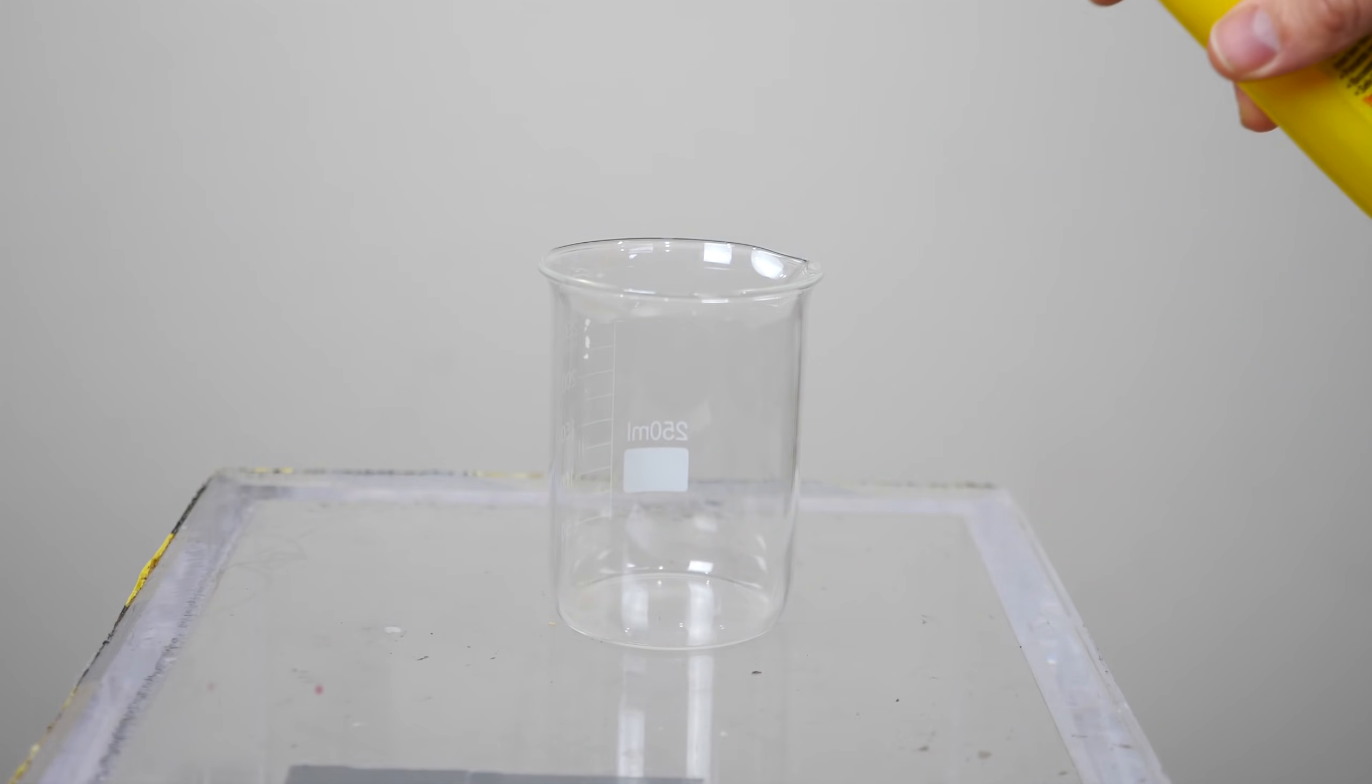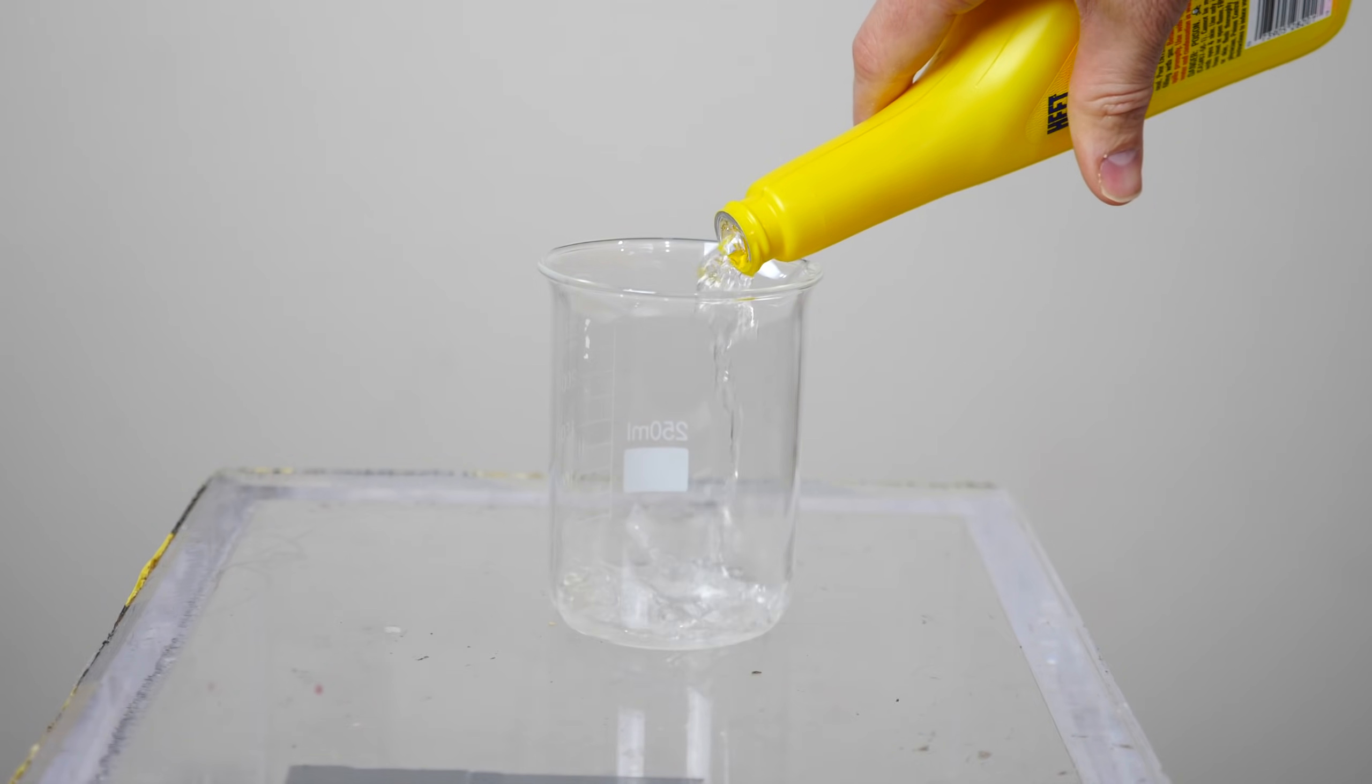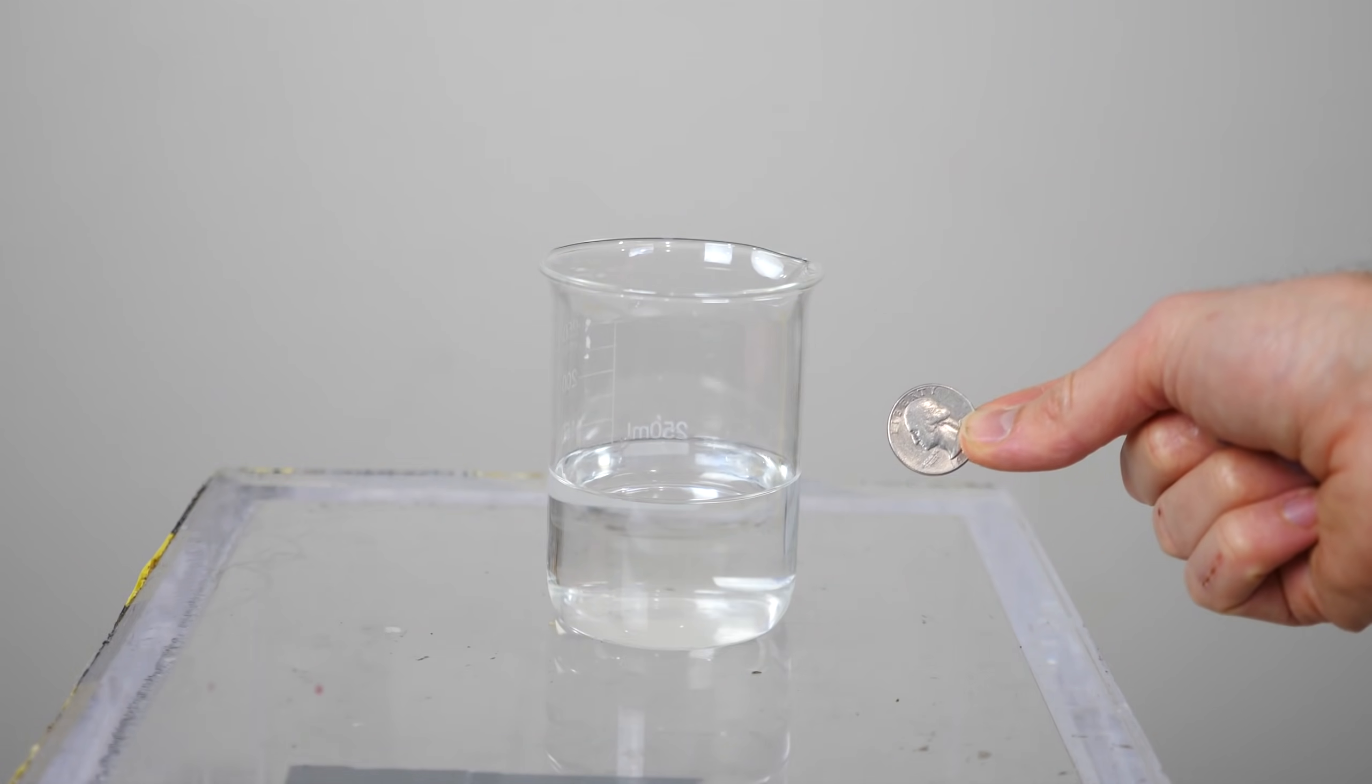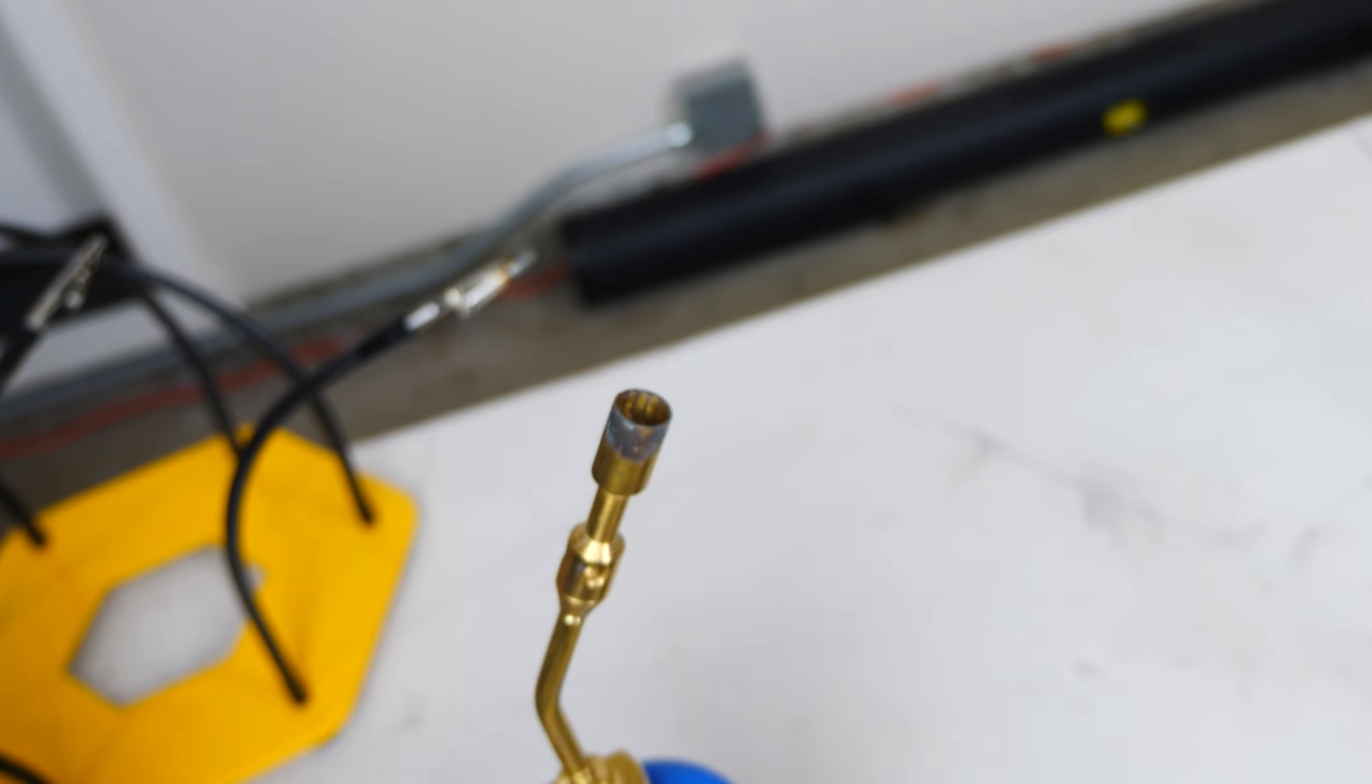Okay, so in order to do this you just need some methyl alcohol, and then you just need to heat up your quarter a lot. Let me show you how to do this.